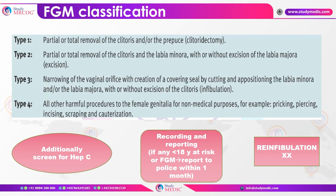Female genital mutilation classification: Type 1 — clitoridectomy alone. Type 2 — clitoridectomy with excision of labia minora or majora. Type 3 — infibulation, where the vaginal orifice is narrowed and sealed. Type 4 — any other harmful procedure. In these cases, refer to a psychosexual counsellor and offer a consultant-led appointment. Screen for hepatitis C. Recording and reporting is mandatory; if any female under 18 appears to be at risk or presents with FGM, it is mandatory to report to police within one month. Reinfibulation is illegal.